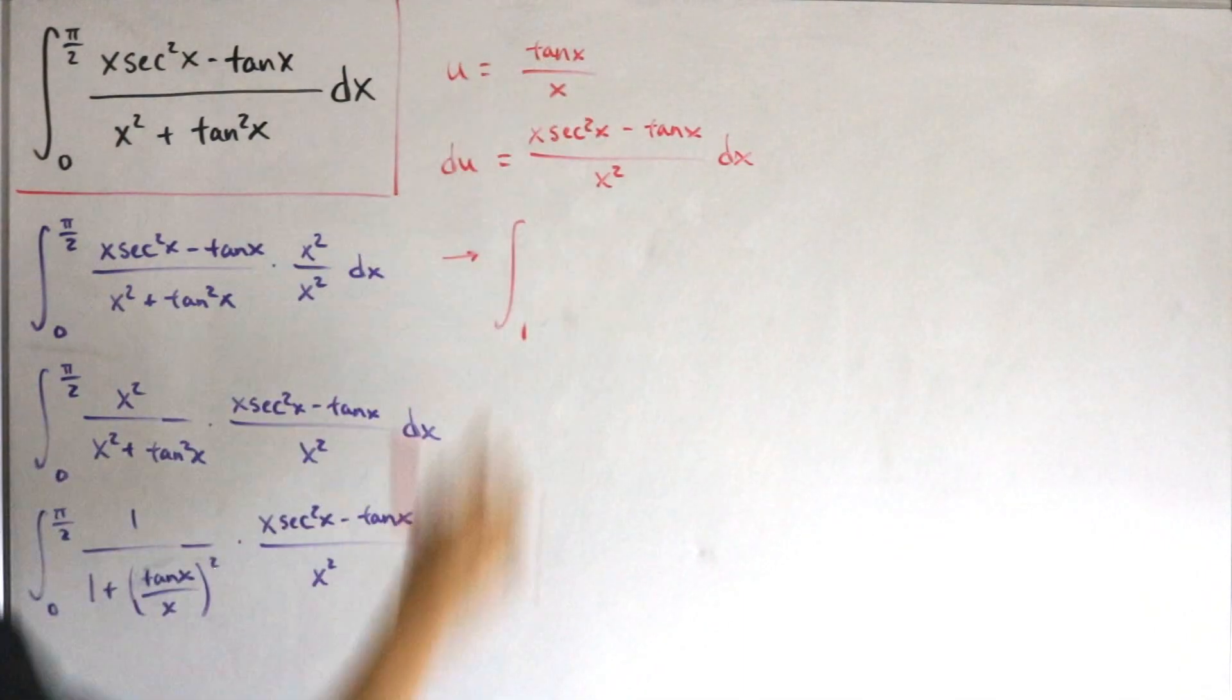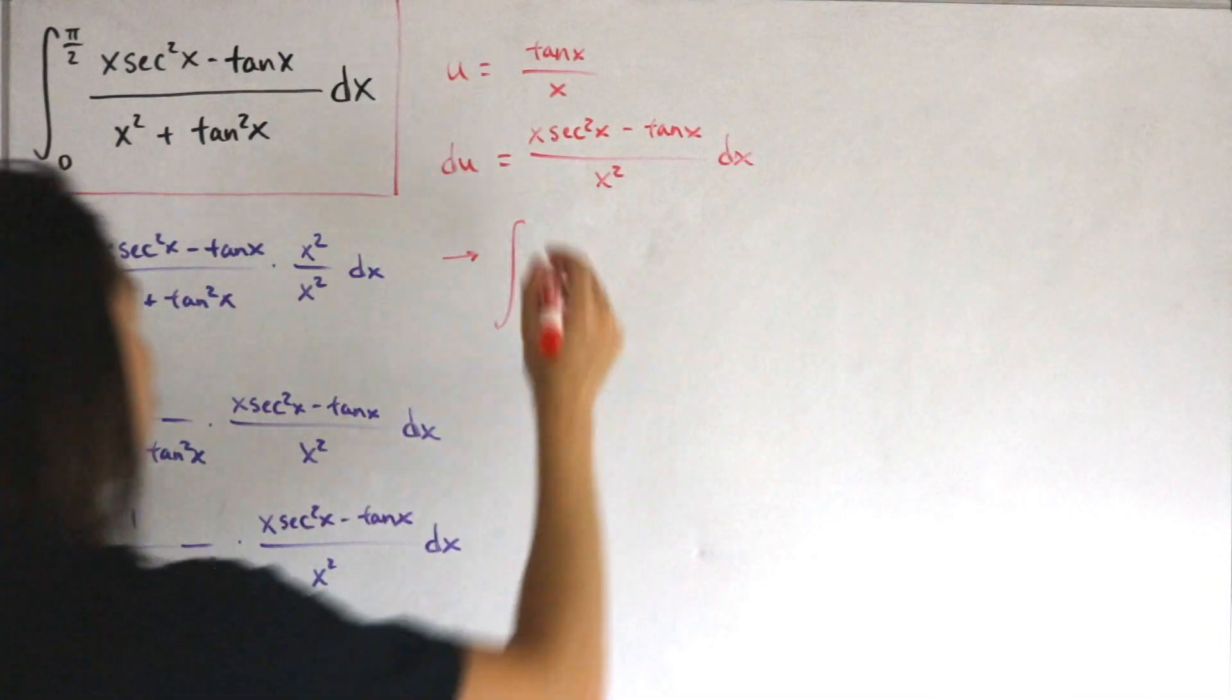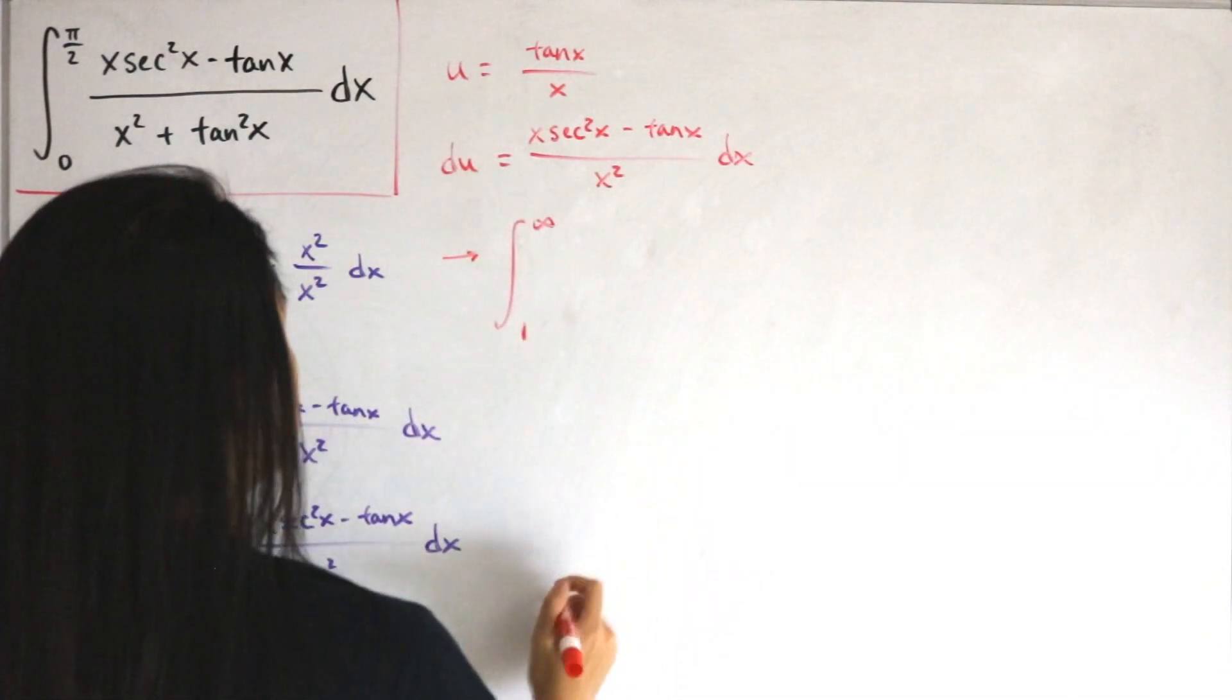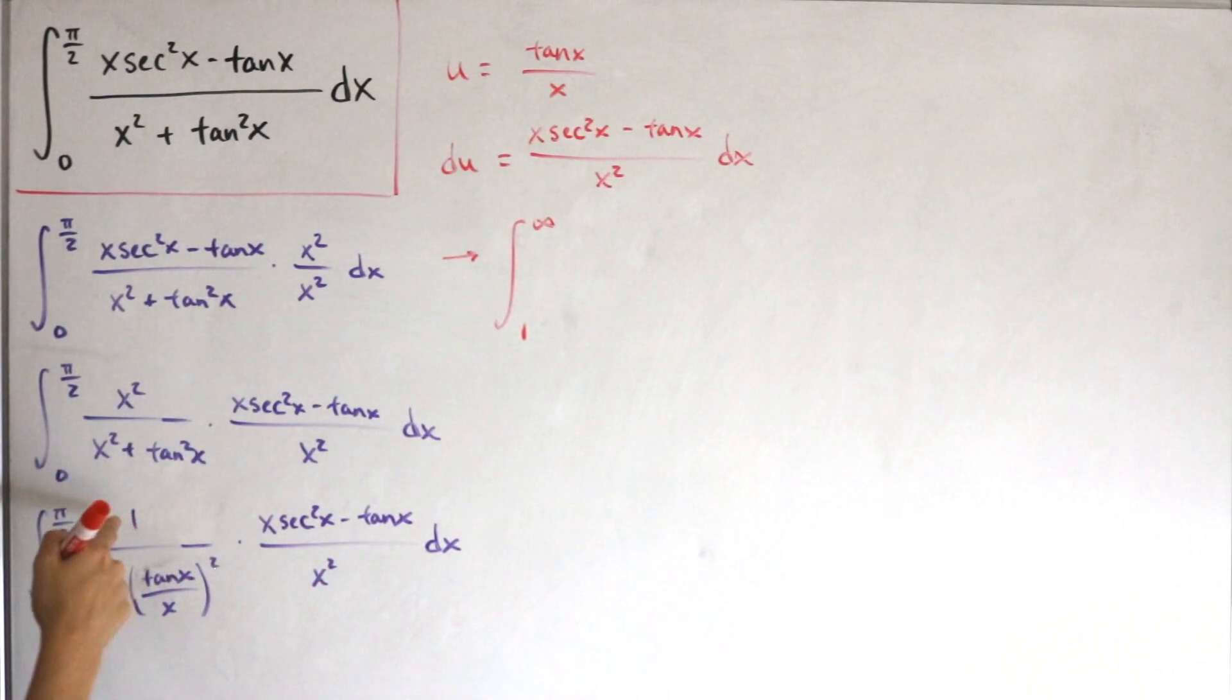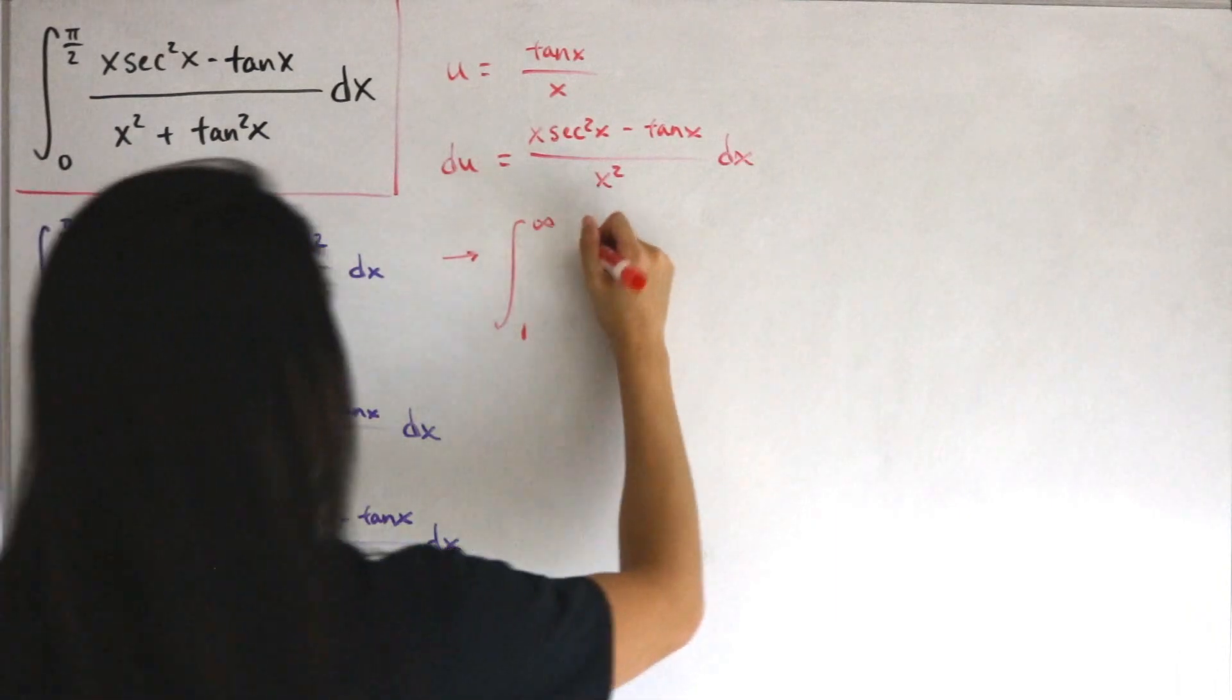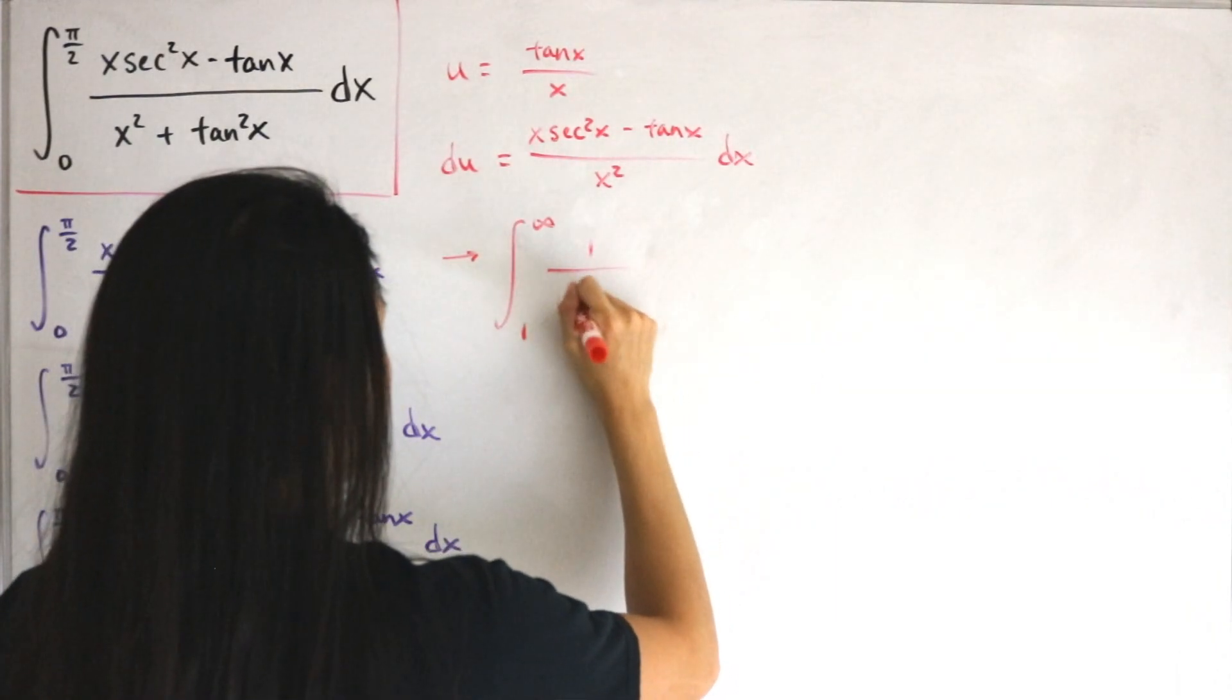So this is actually going to approach infinity. Then we replace this with du, so that just gets rid of itself. We're left with 1 divided by 1 + u², and it's pretty simple to see that this is a well-known antiderivative.